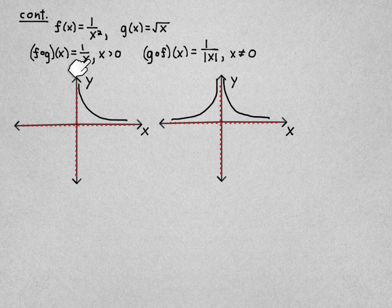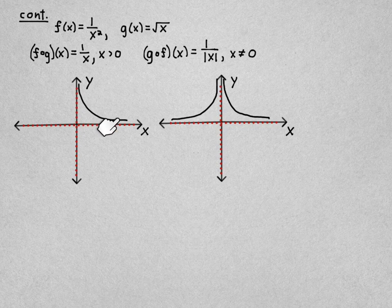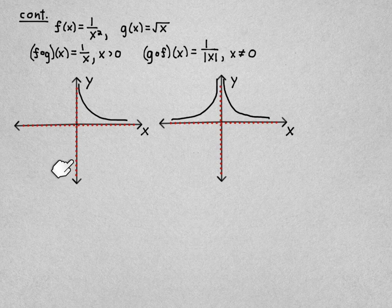The graph of f composed with g is this. It's a single branch, what we call a branch of a hyperbola. The other branch would be here, but we can't have x be negative.